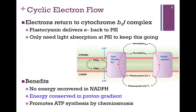So non-cyclic electron flow benefits are NADPH and some proton gradient we can use to make ATP. However, for cyclic flow, the benefits are the proton gradient and the ATP we can synthesize as a result of that.